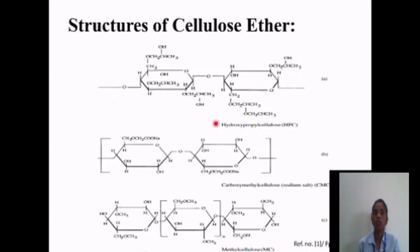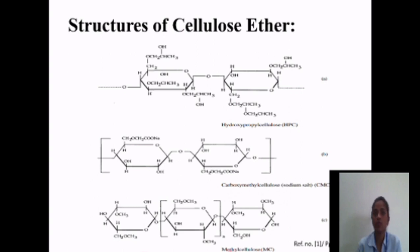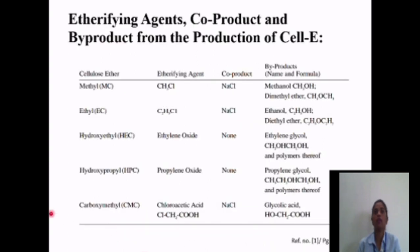These are the typical structures of cellulose ether. The first one shows hydroxypropyl cellulose, the second shows carboxymethyl cellulose, and the last is methyl cellulose. Moving on to the next slide, which involves etherifying agents, co-products, and by-products from the production of cellulose ether, shown in tabular form.